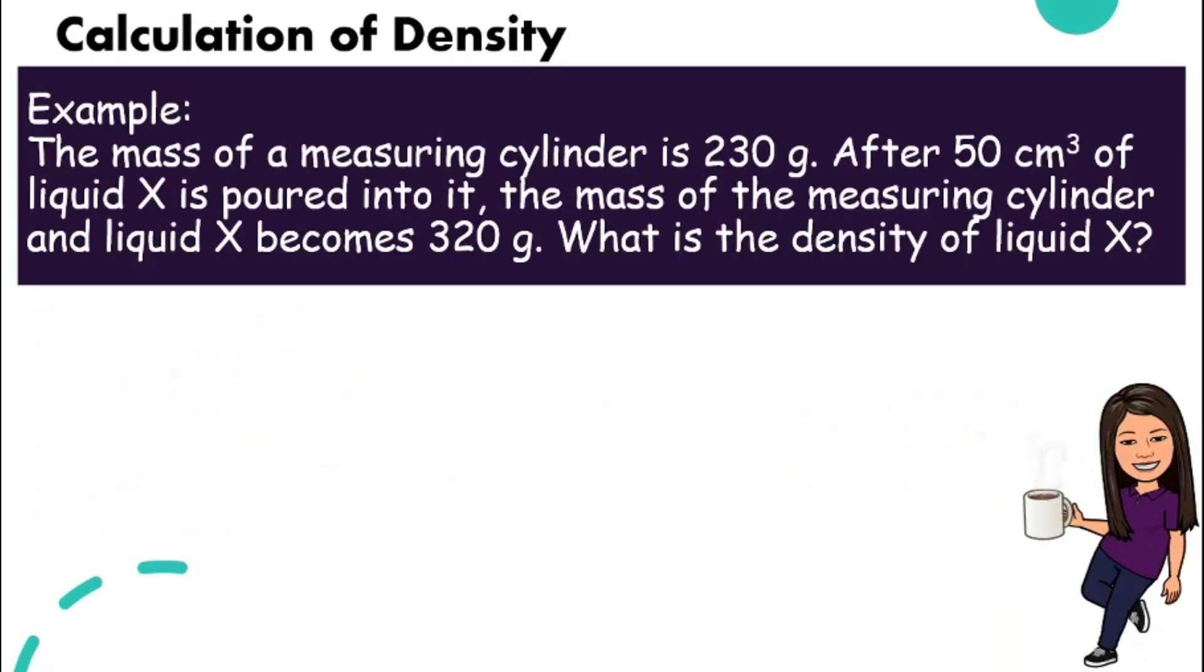Let's look at one example on how we can calculate the density. This is one example question. The question told us that the mass of a measuring cylinder is 230 grams. This is an empty measuring cylinder. There's nothing yet.